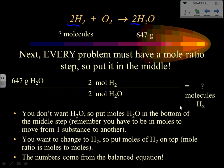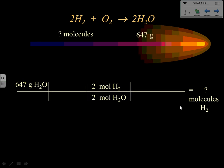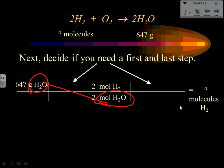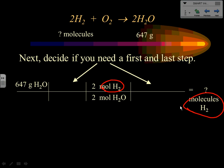Now decide if you need steps one and three. Looking at the mole ratio step: on the left I have grams of water, but the middle step requires moles of water — so yes, I need step one to convert grams to moles. At the end, I want molecules of hydrogen but the middle step gives moles of hydrogen — so yes, I need step three. If you're not in moles at the start, do step one. If the answer isn't in moles, do step three.